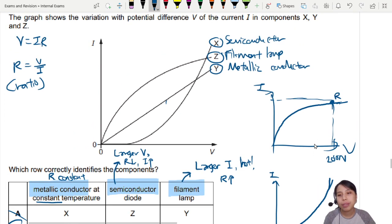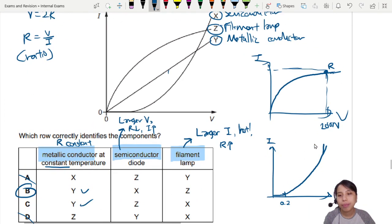All right so the best choice here will be B. The shape, kind of know the shape. Okay so this one, resistance is decreasing, you get this kind of shape. Resistance increasing, you get this kind of shape. Know the shapes.